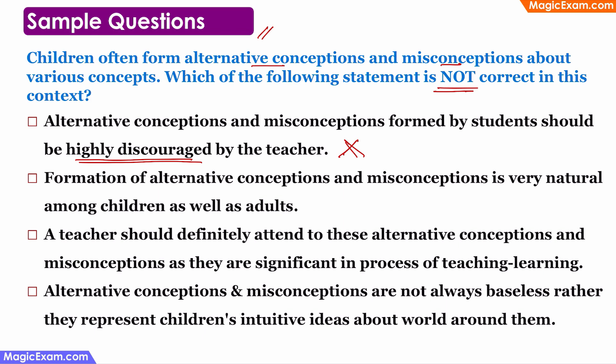Statement two: formation of alternative conceptions and misconceptions is very natural among children as well as adults. As discussed, this is completely natural — be it a child or an adult, everyone will have something — so this statement is correct. Statement three: a teacher should definitely attend to these alternative conceptions and misconceptions as they are significant in the process of teaching and learning. Since they can prevent acquisition of new knowledge, a teacher should identify, confront, and correct them — so this statement is also correct.